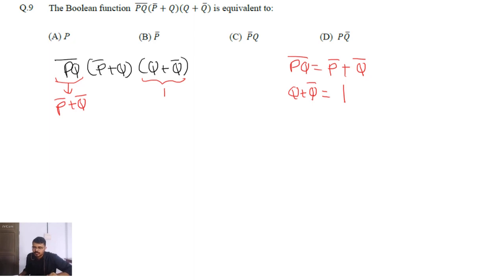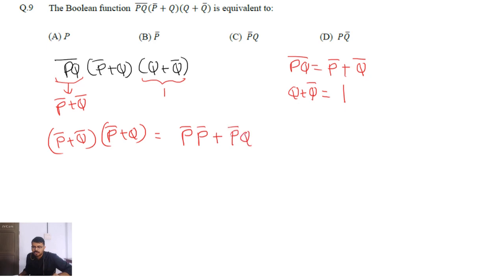So what we are left with is (p̄ + q̄) · (p̄ + q). Now multiplying these terms, we will get p̄·p̄ + p̄·q + q̄·p̄ + q̄·q.